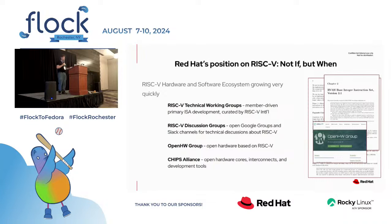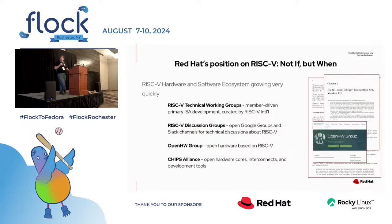RISC-V is a very flexible ISA, and that is both a blessing and a curse — it means people are going to iterate on it and come up with things that are non-standard. There is a certification effort within the RISC-V community to determine essentially what is RISC-V and what isn't, and the Open Hardware Group has a great opportunity to help be the reference architecture around that. Chips Alliance is similar — they produce open hardware cores and spend a lot of time on development tools and interconnects.